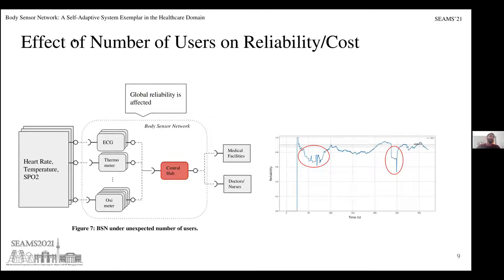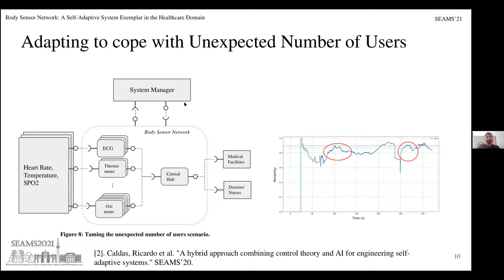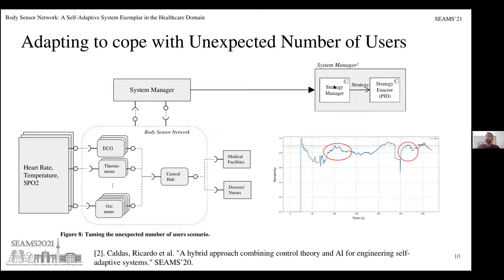Using the example of the uncertainty injector — injecting failures for an increasing number of users — we can collect data about the reliability of the system. You can see two decays in reliability at two specific points. We also provide a system manager which follows an approach we presented last year at SIMS. This approach uses a strategy manager with two components, one of which uses control theory to adapt the system.